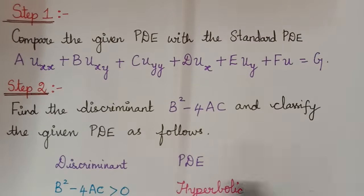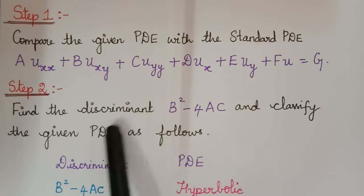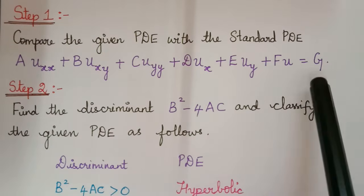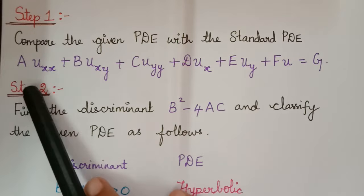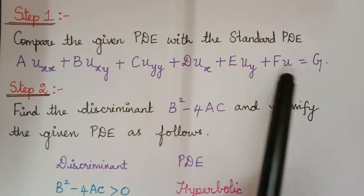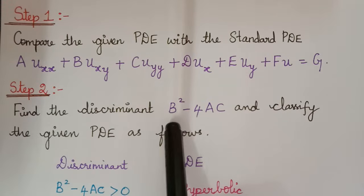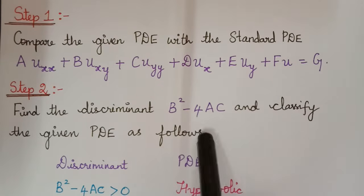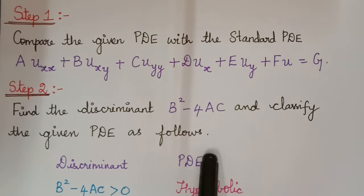Step 2 is to find the discriminant value. From the given partial differential equation we have to obtain the values of A, B, C, D, E, F, and G, and then we have to find the discriminant value B squared minus 4AC and classify the given PDE as follows.